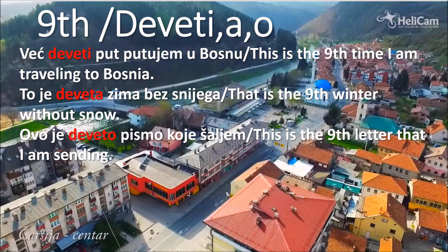To je deveta zima bez snijega - that is the ninth winter without snow. Zima is feminine, therefore we're using deveta. The last one: ovo je deveto pismo koje šaljem - this is the ninth letter that I'm sending. Pismo is unknown gender, neuter, so therefore we're using deveto.